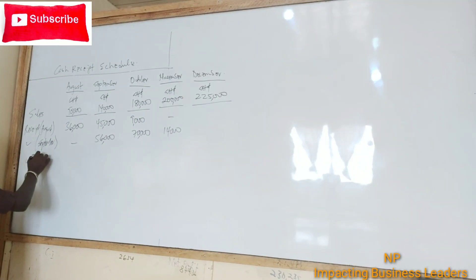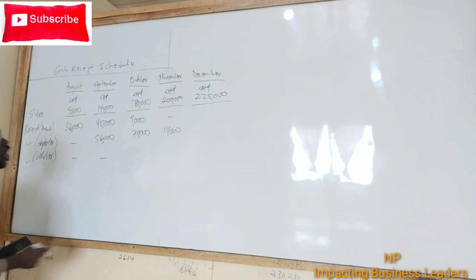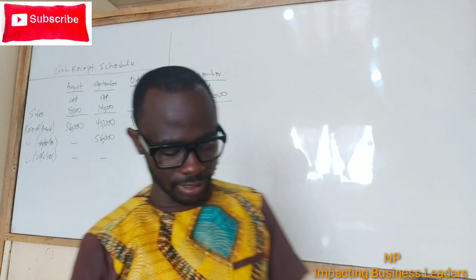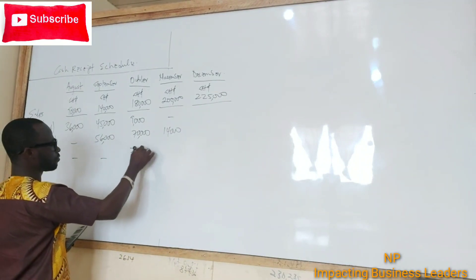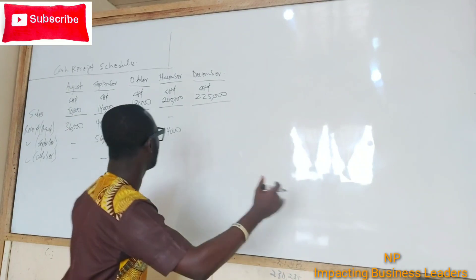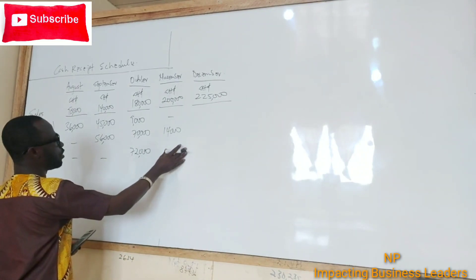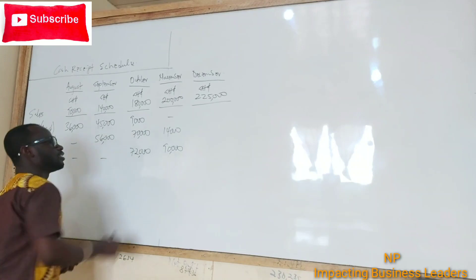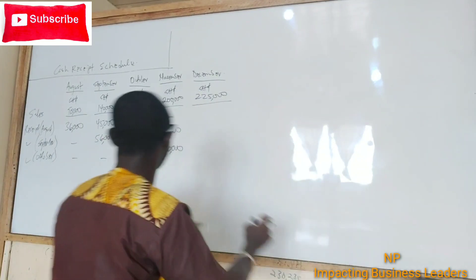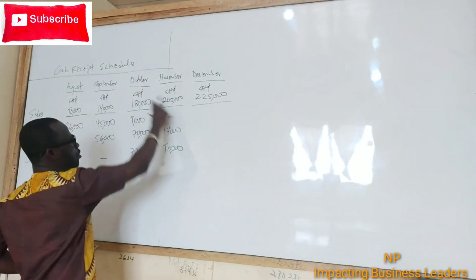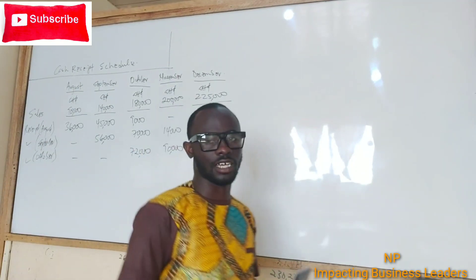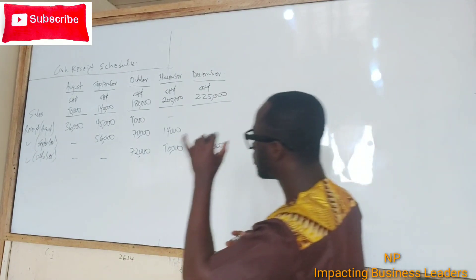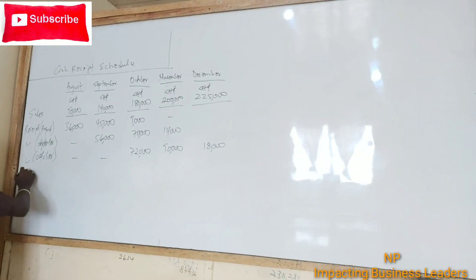Receipts for October sales: in October we receive 40%, which is $72,000. The month following October is November, and we receive 50%, which is $90,000. Then the second month after the sales — December — we receive 10%, which is $18,000. That covers October's sales collections.